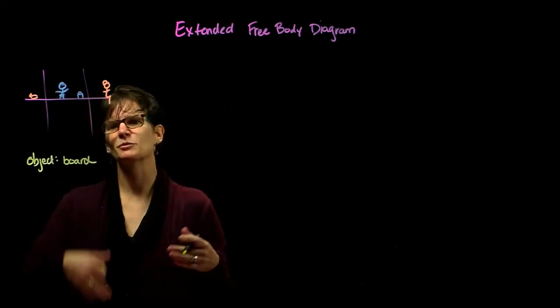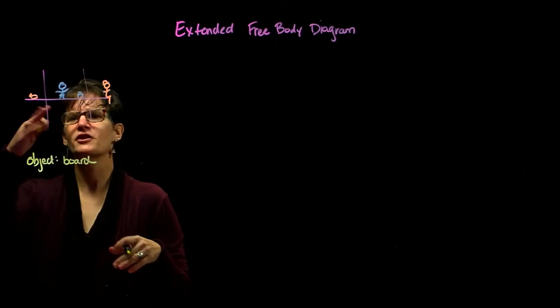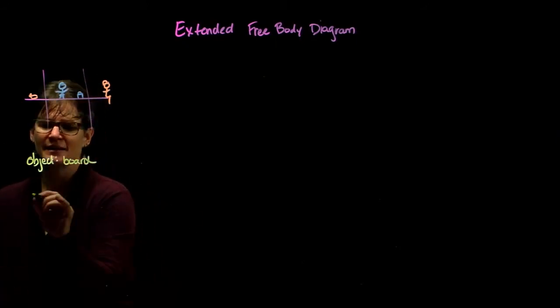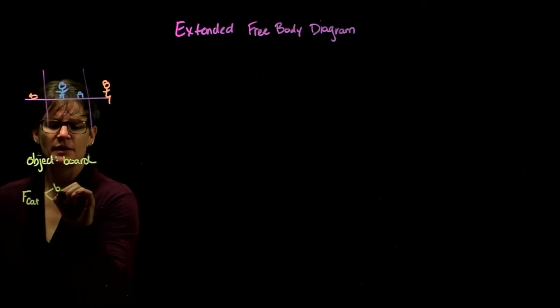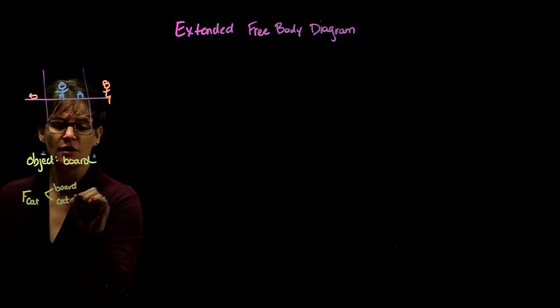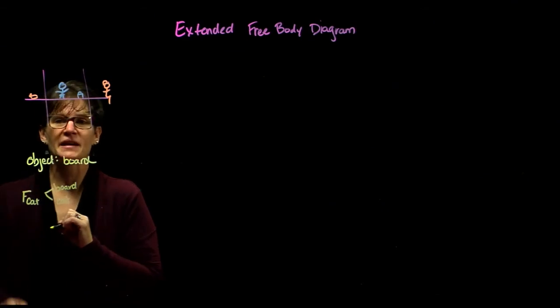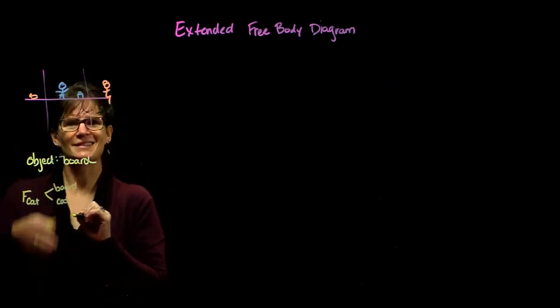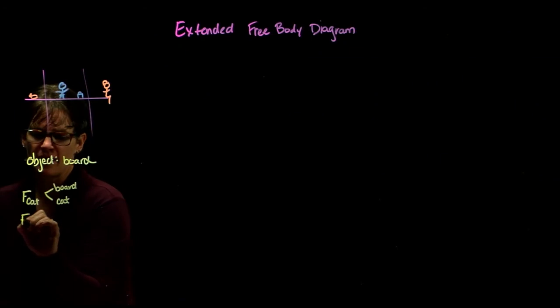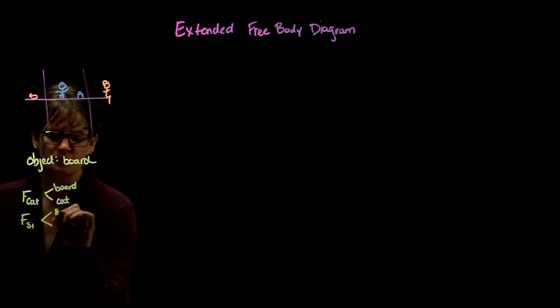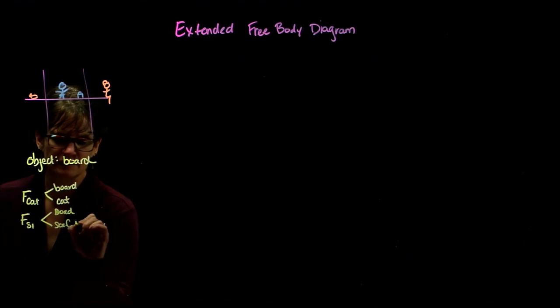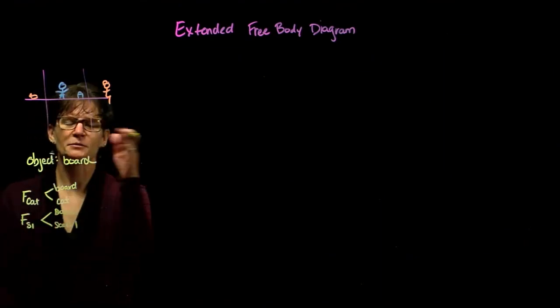Let's start on the left side and move to the right. We see that the first interaction with the board is the cat. So there's a force of the cat between the board and the cat. The cat, after all, is interacting with the board. As we continue to move to the right, we see the scaffolding brace, so we have the force of scaffolding one, and that's because we're going to have another one later. That's between the board and scaffolding number one.